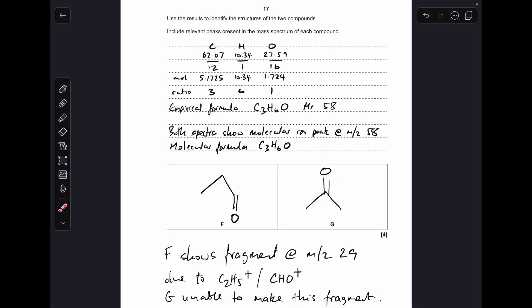So in terms of justification I'm just saying F shows a fragment at m/z 29 that's due to C2H5+ or CHO+ and we'll just say G is unable to make this fragment.